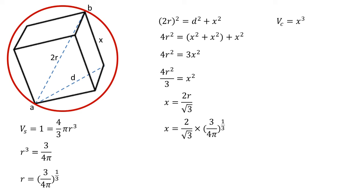The volume of a cube is x³, so substituting this in we get the cube of (2/√3) times (3/(4π))^(1/3).